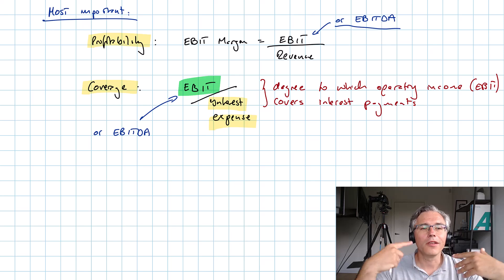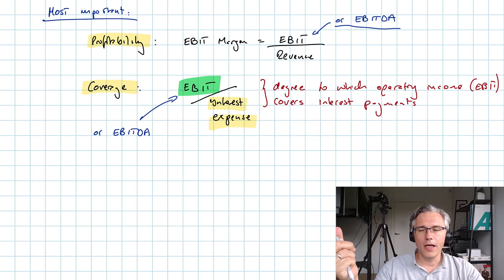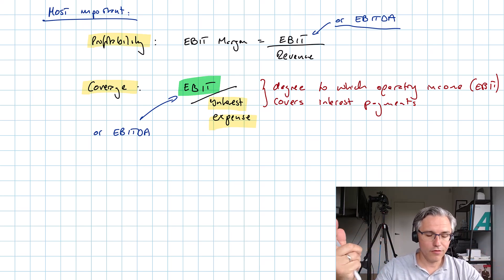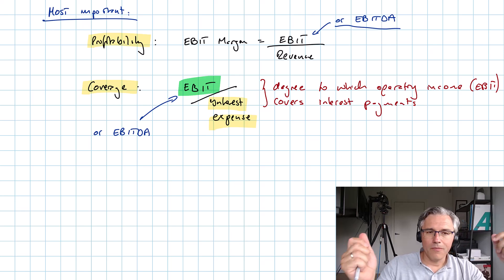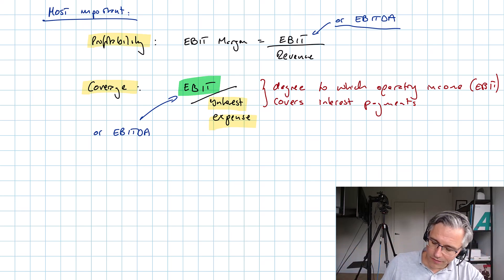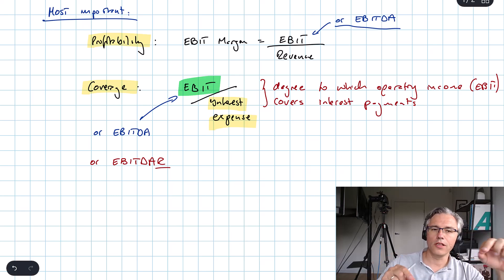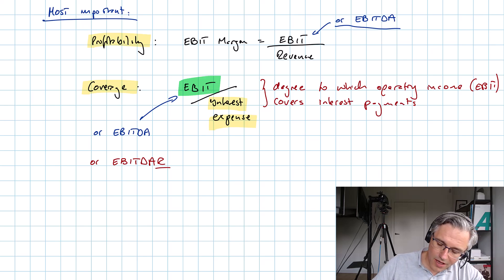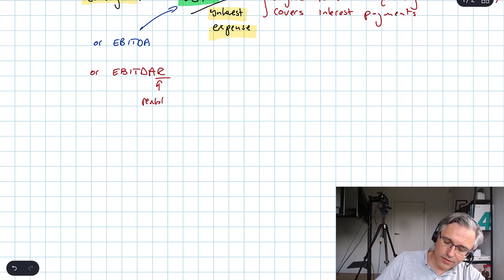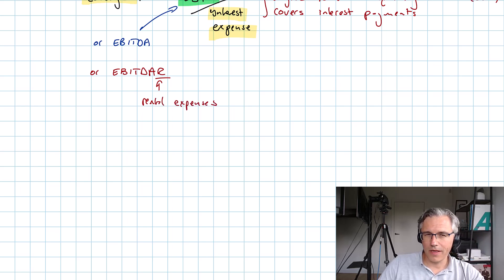However, please appreciate that there is another adjustment you can make. You can switch to EBITDAR, and this is of course earnings before interest, taxes, depreciation and amortization, but also R which is going to stand for rental expenses.